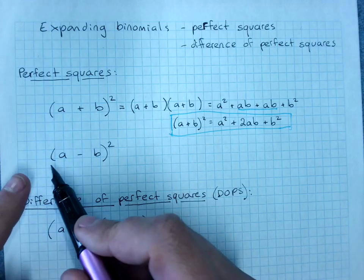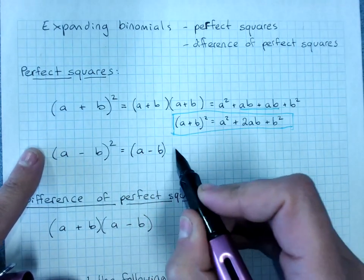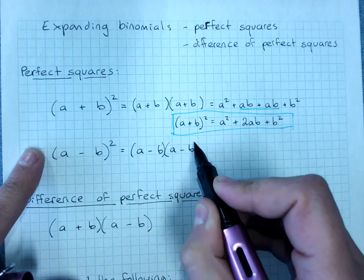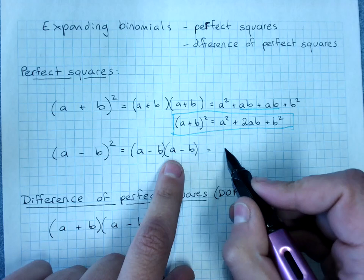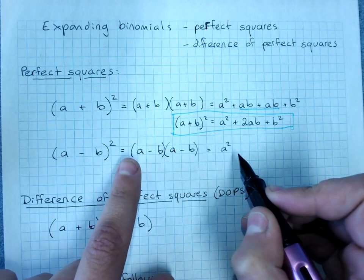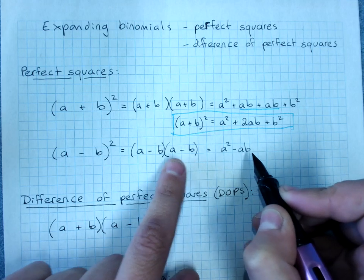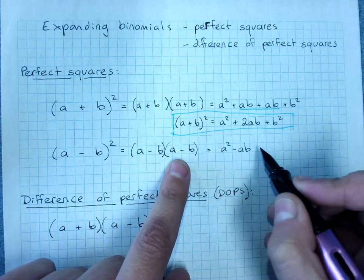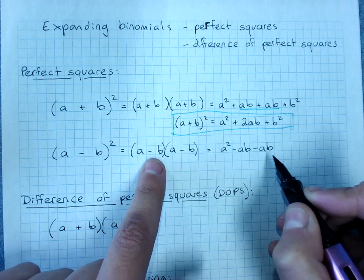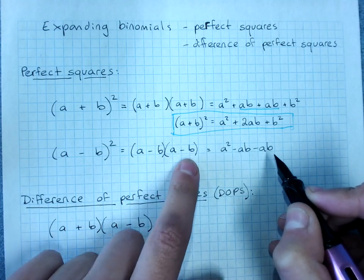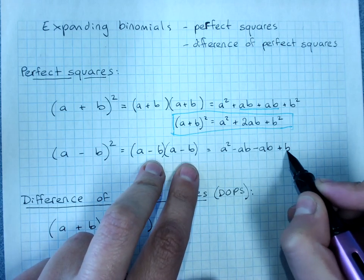If we look at (a-b) all squared, that would be (a-b)(a-b). We'll expand it out to see what happens. a times a, we still get a squared. a times negative b, negative ab. Negative b times a, we can rearrange to get negative ab. Negative b times negative b, please remember a negative times a negative is positive, I get plus b².